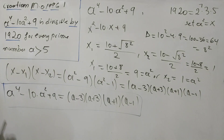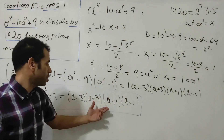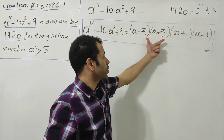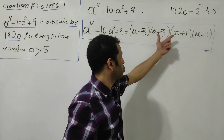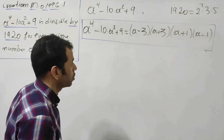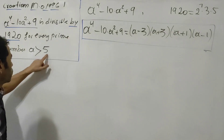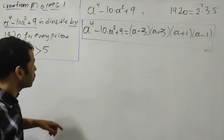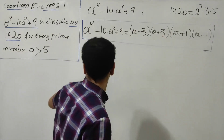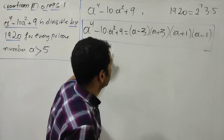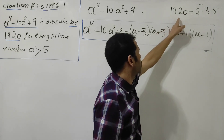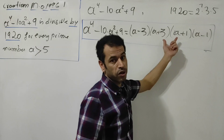Now, to show this term is divisible by 1920 we are going to reduce it modulo 2, 3, and 5 using the congruence definition. Be careful: e must be strictly greater than 5 as a prime number. If you take e equal to 5 or e strictly less than 5, you will have a problem — this term will not be divisible by 1920 because some factors will vanish.